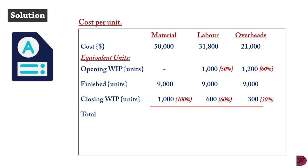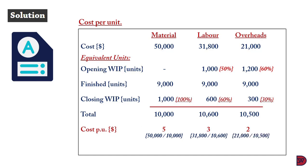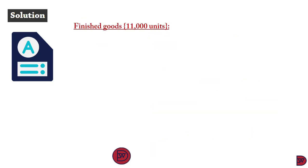Total equivalent units: 10,000 for materials, 10,600 for labor, and 10,500 for overheads. This gives a cost per unit of $5 for materials, $3 for labor, and $2 for overheads, making the total cost per unit $10.